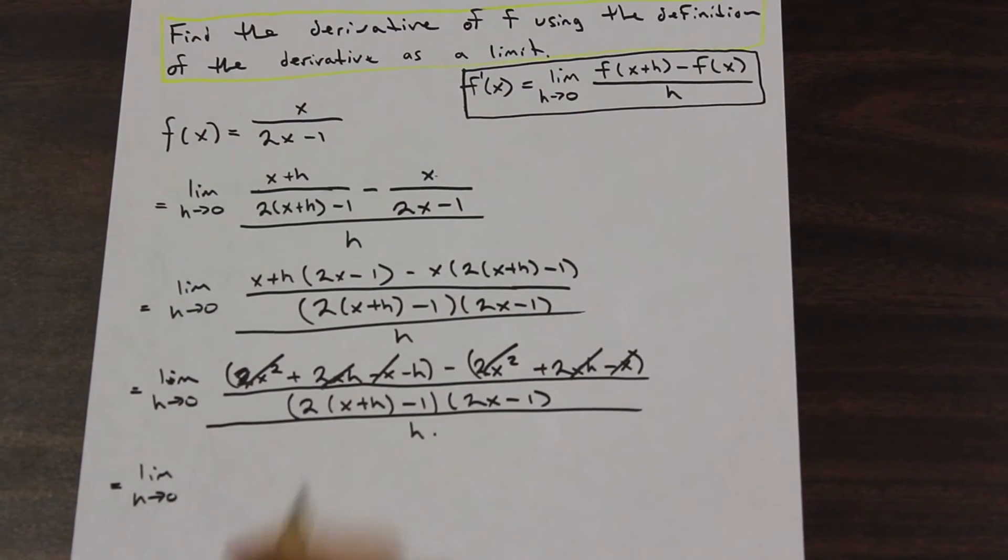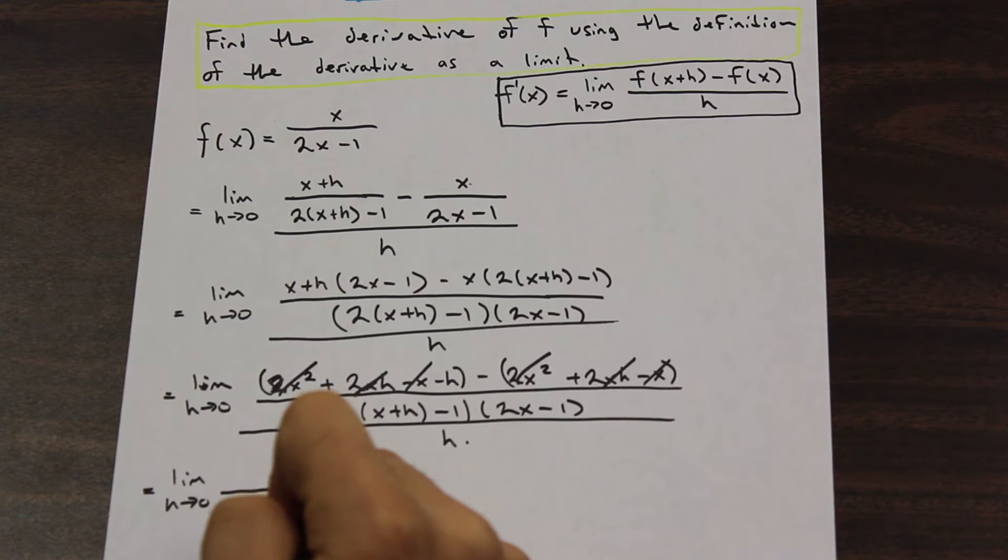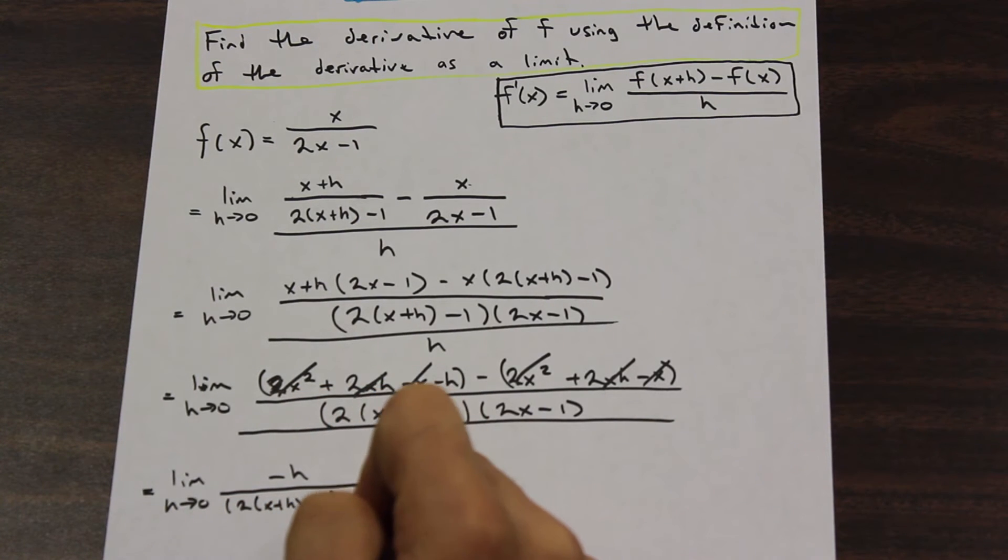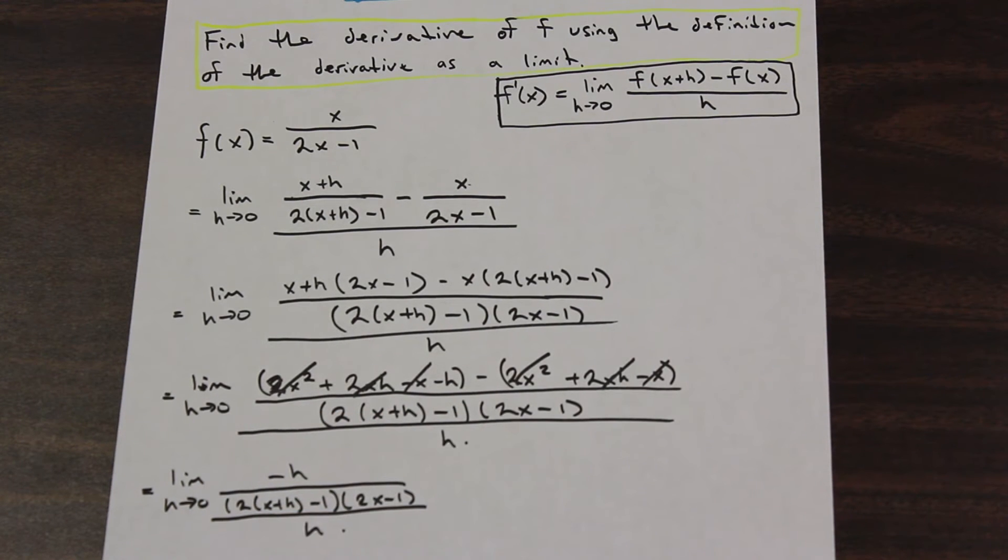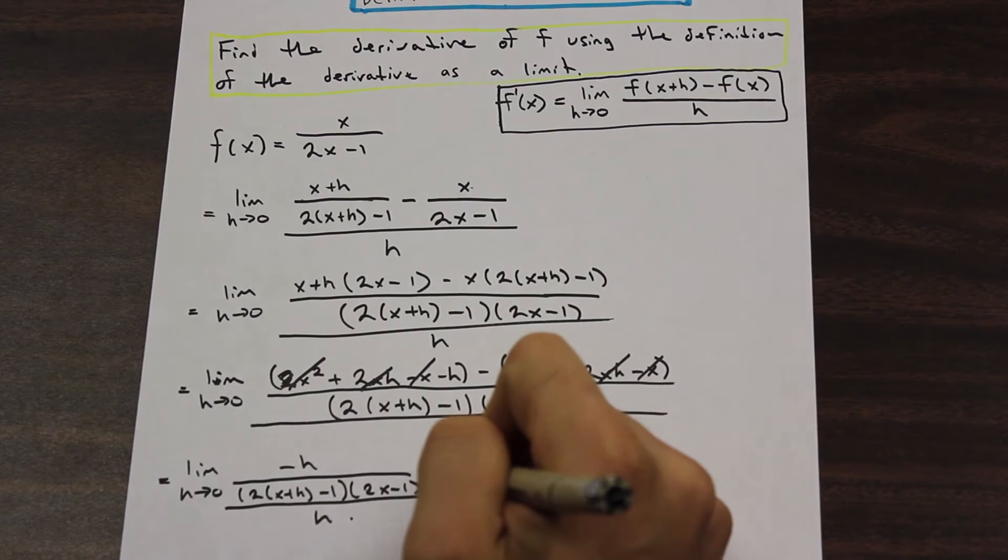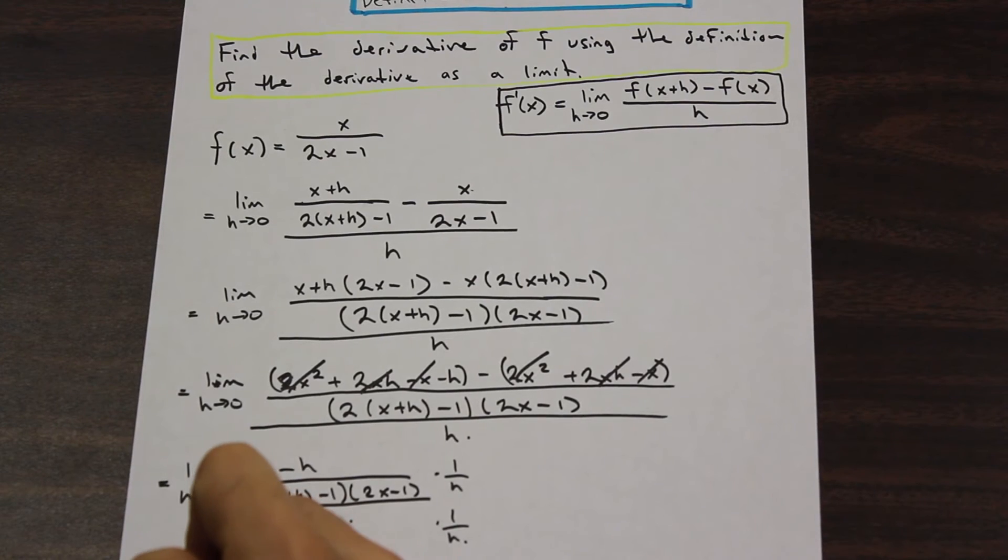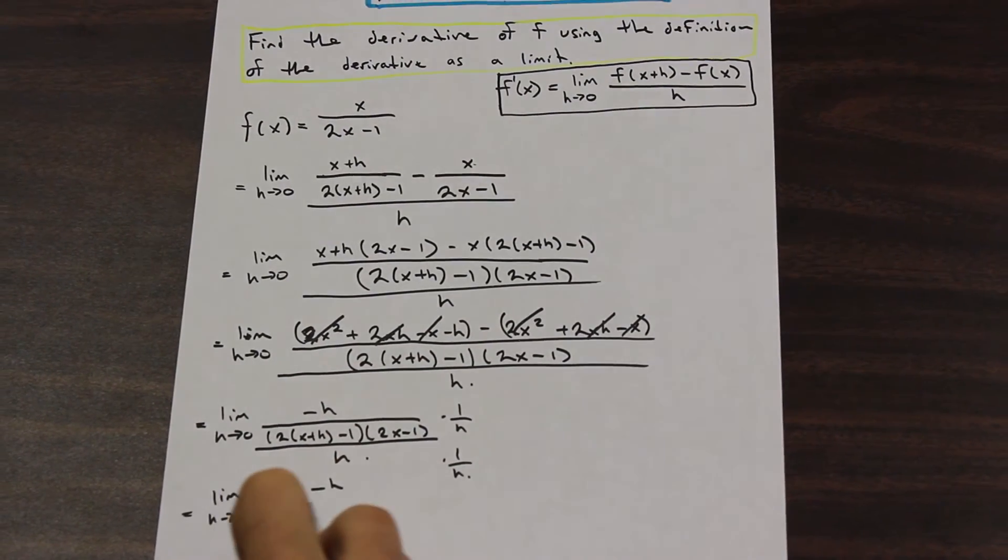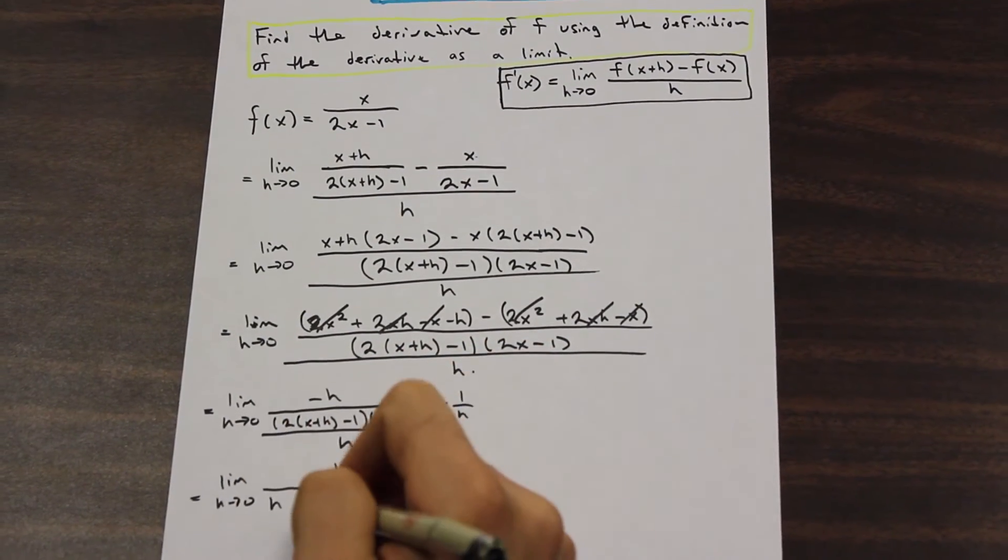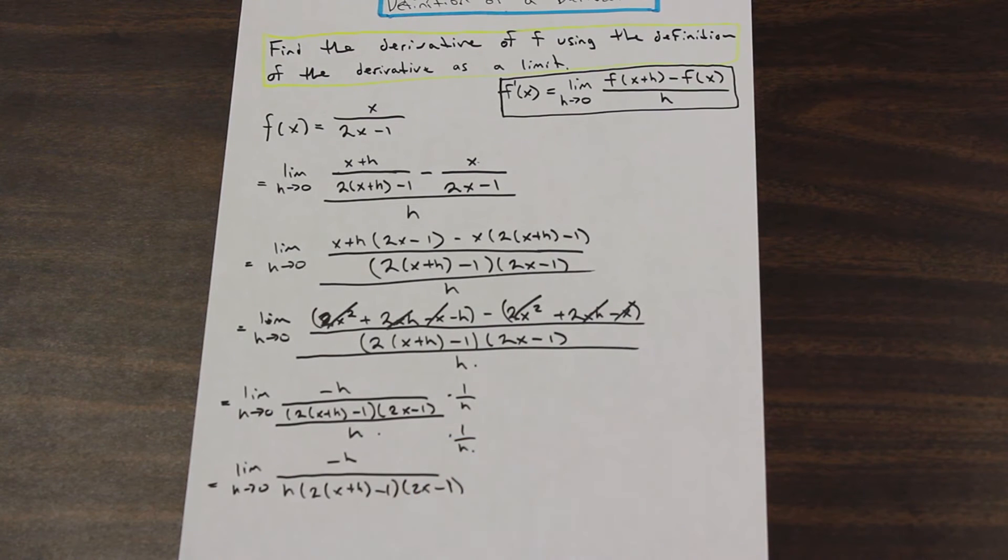So we have the limit as h approaches 0 of negative h over (2x+h-1)(2x-1) over h. And let's get this into a form where we could cancel the top and the bottom because we can't right now. So if we go ahead and we multiply the top and the bottom of the fraction by 1 over h, we will end up with the limit as h approaches 0 of negative h over h(2x+h-1)(2x-1).